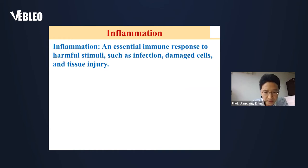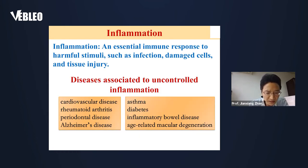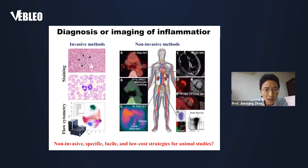As we all know, inflammation is an essential immune response to harmful stimuli such as infection, damaged cells, and tissue injury. Uncontrolled inflammation is closely related to the pathogenesis of many diseases such as cardiovascular disease and inflammatory bone disease. So early diagnosis and imaging of inflammation is very important for the management of many inflammatory diseases.